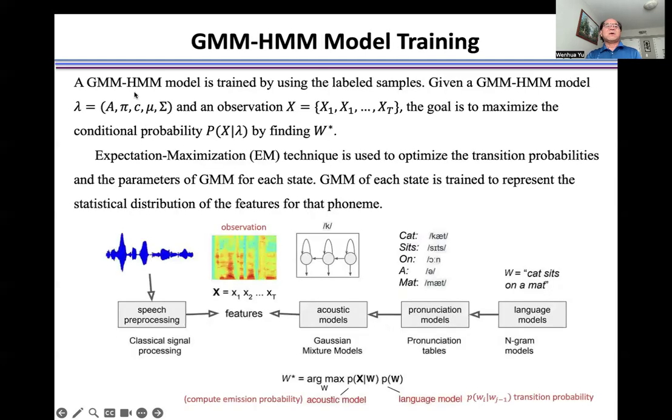A GMM-HMM model is trained by using the labeled samples. Given a GMM-HMM model λ and the observation sequence, the goal is to maximize the conditional probability P by finding W*.